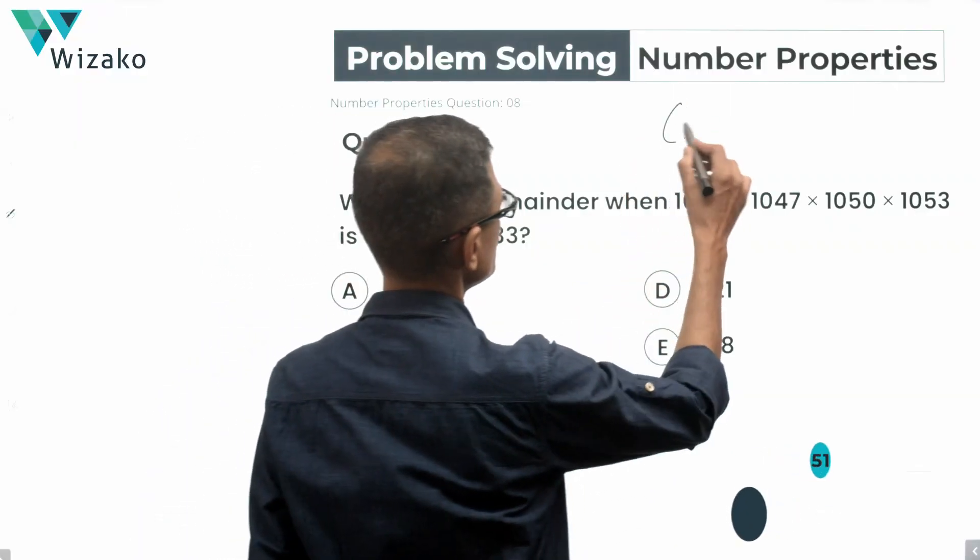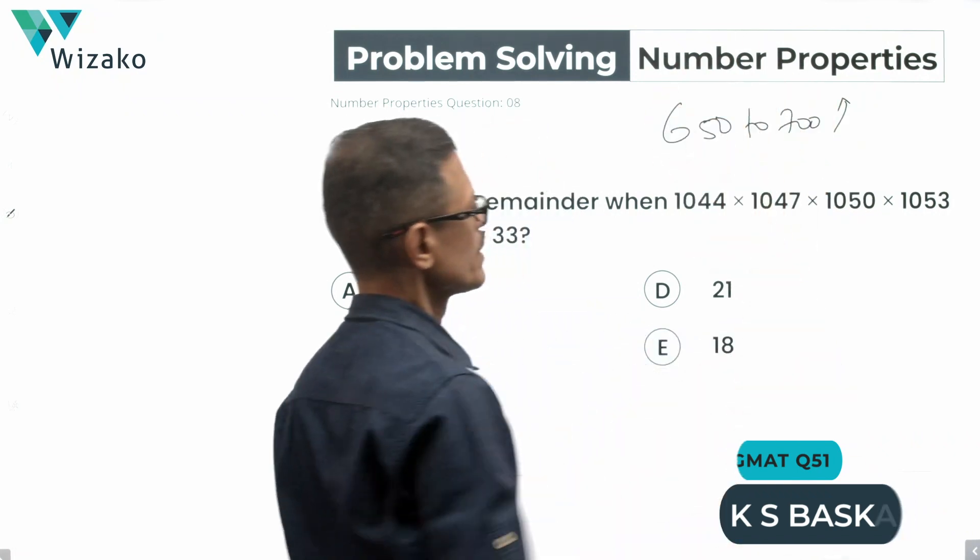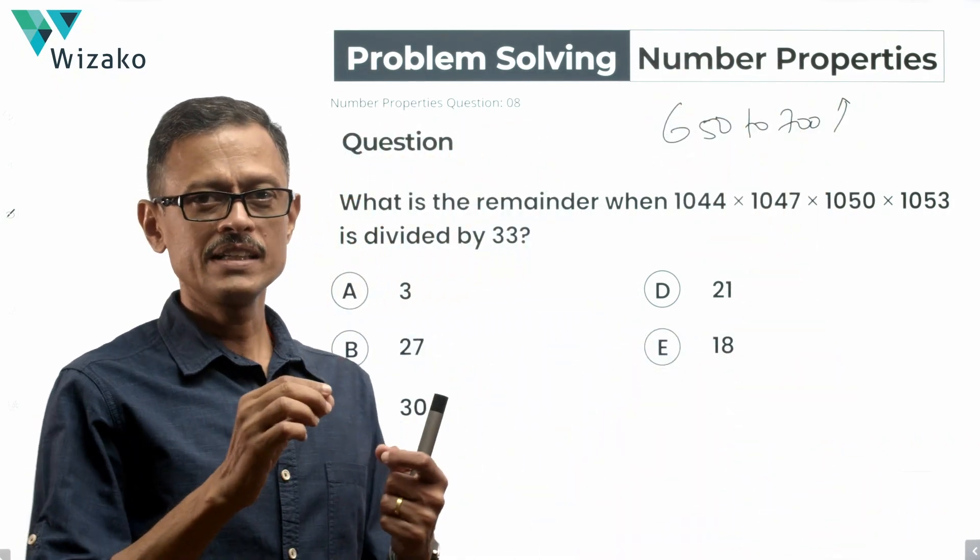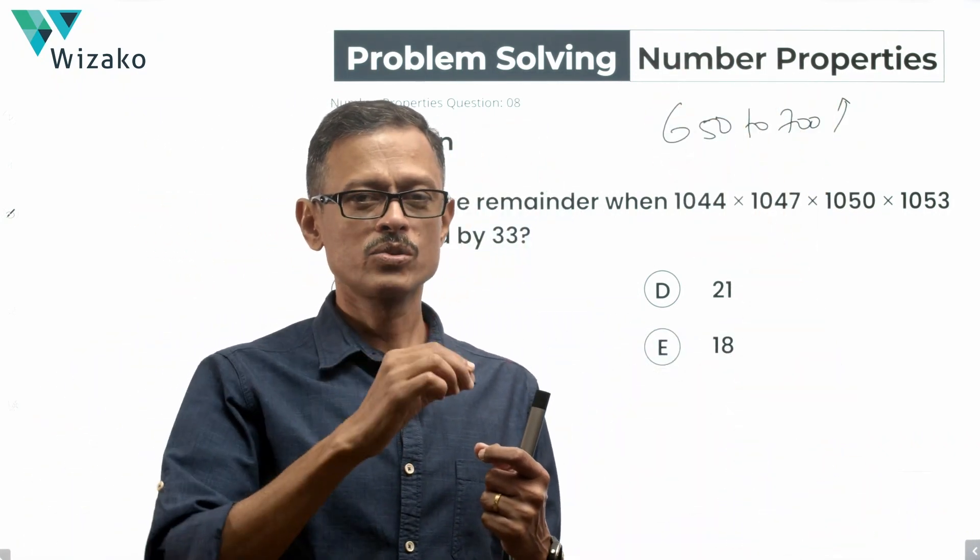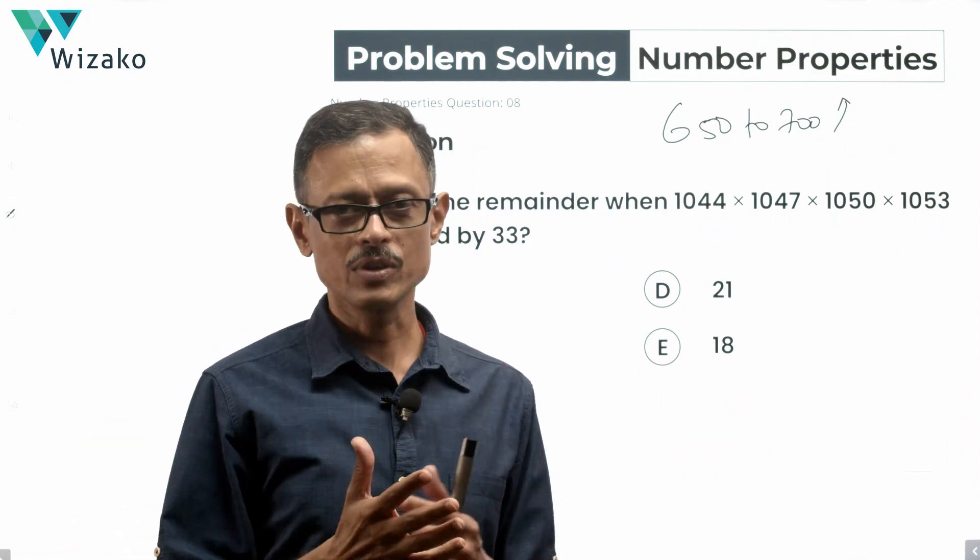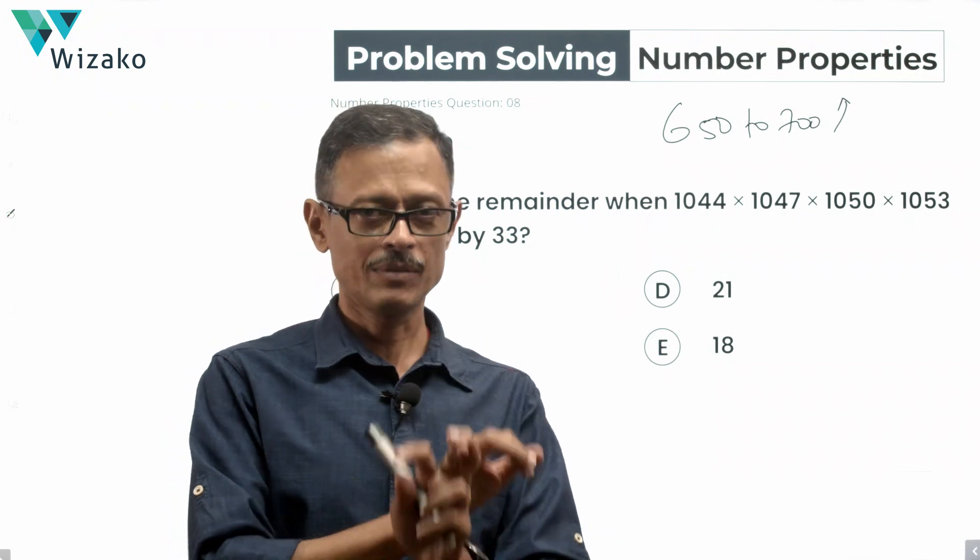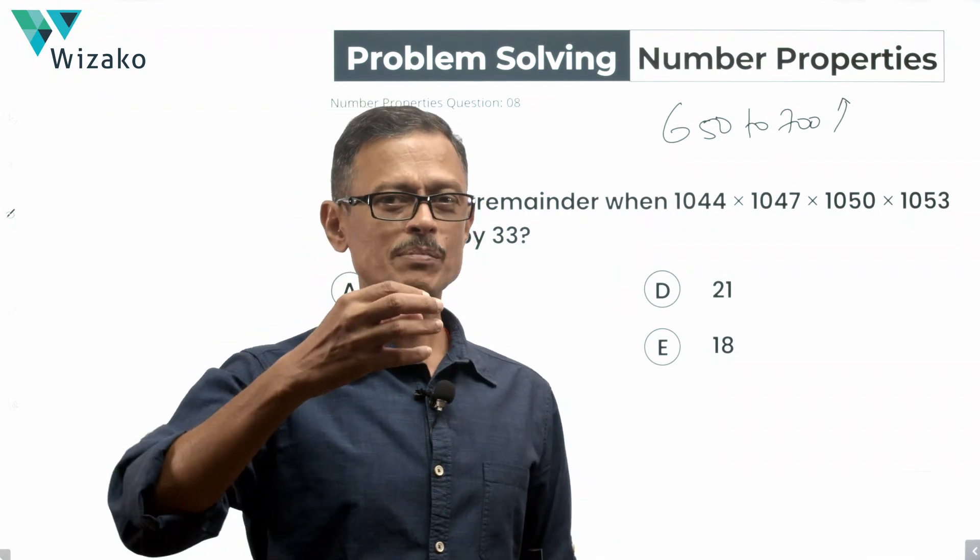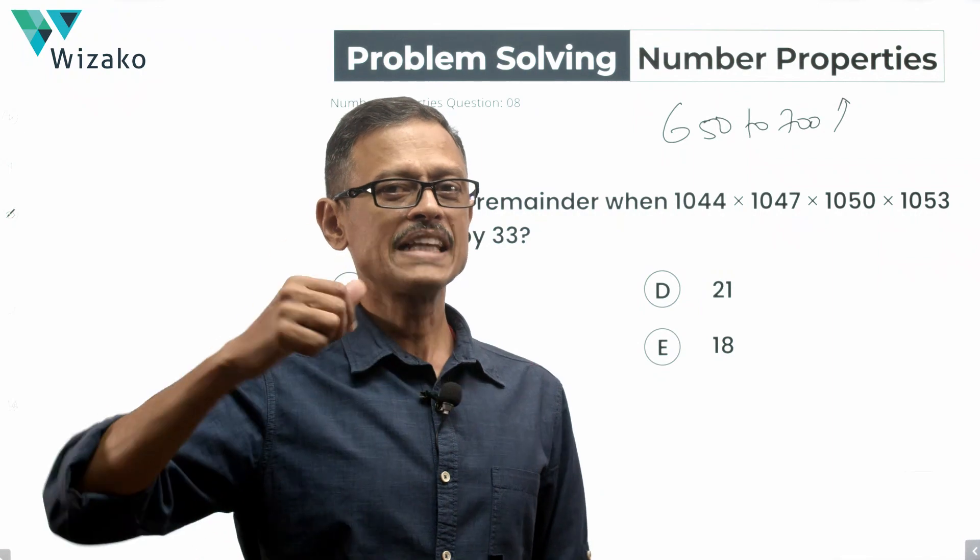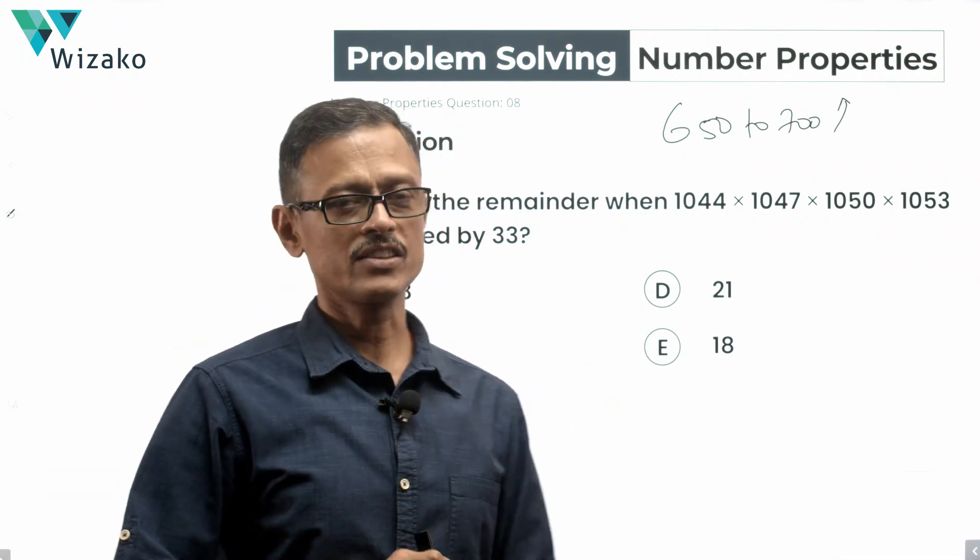This question is a GMAT 650 to 700 level problem-solving question in Number Properties. The concepts tested are properties associated with computing remainders when you find product remainders for a product of numbers, Euclid's division lemma, and computing negative remainders to make the calculation easier.